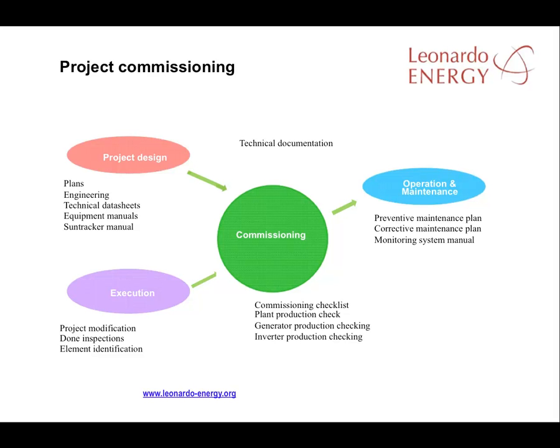The first step in the commissioning process is the creation of a commissioning checklist. Total plant production against forecasts, as well as the production of individual modules and the production of the inverter, are each extremely important.